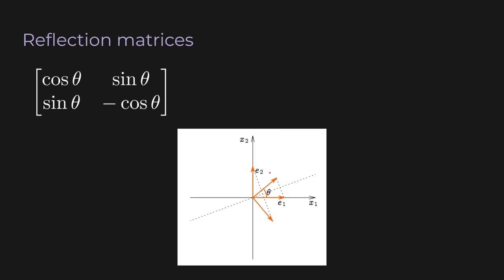Reflection matrices are another special type of orthogonal matrix. Here's the formula for generating a 2D reflection matrix — half of the angle theta defines the line of reflection. Note that e₁ gets reflected across the line up to e₁', while e₂ gets reflected across the line down to e₂'. In this case, lengths and angles between vectors are also preserved — e₁' and e₂' still have 90 degrees between them.